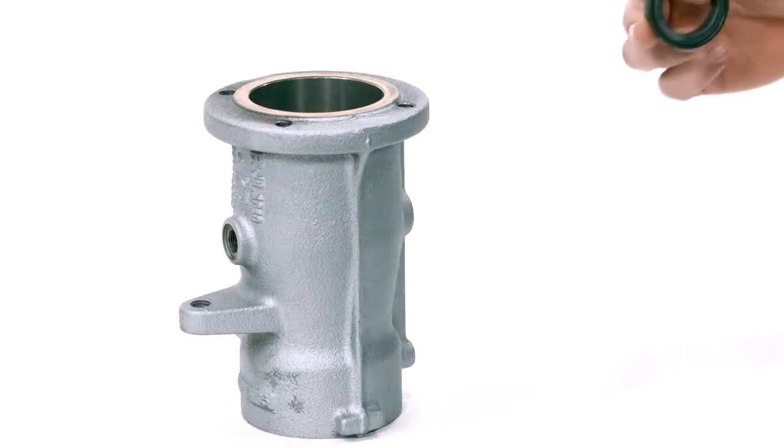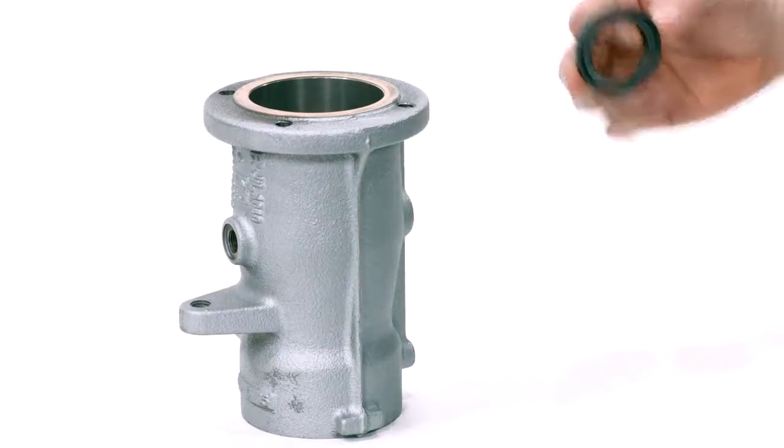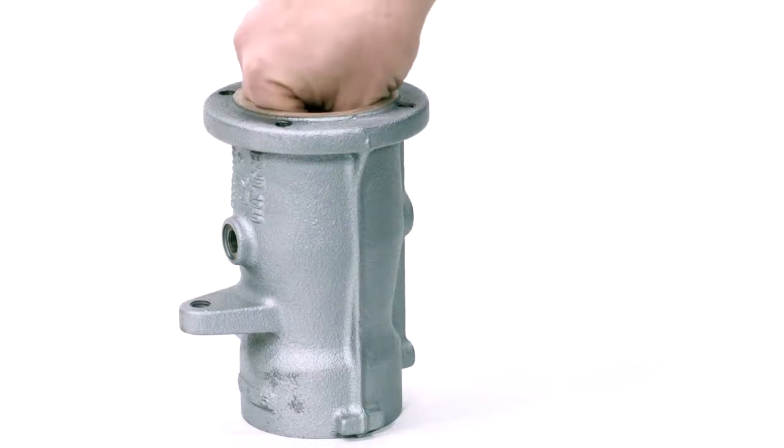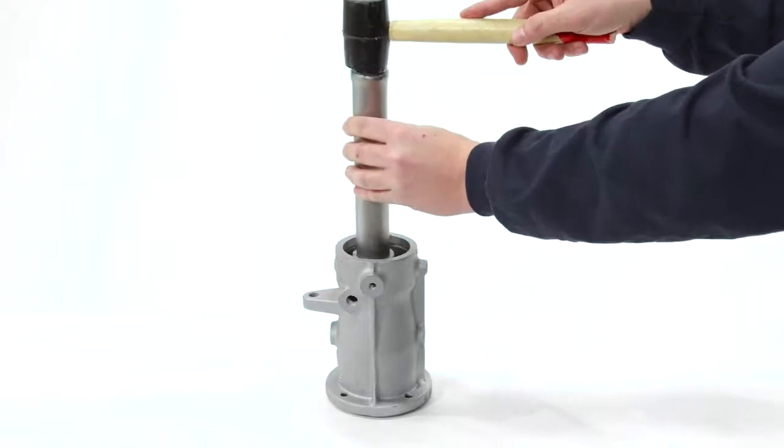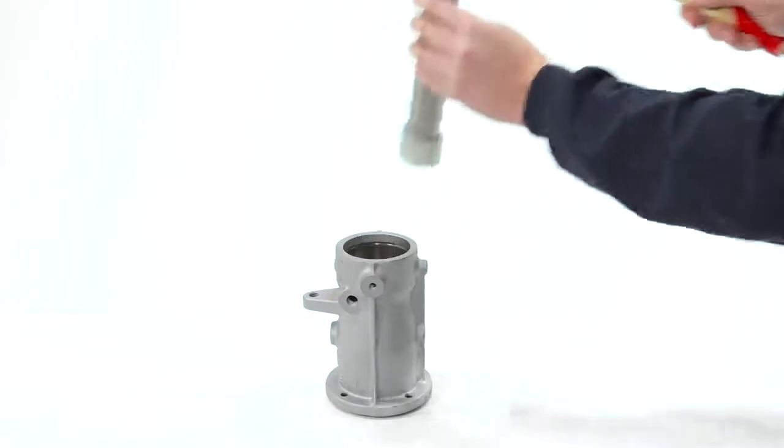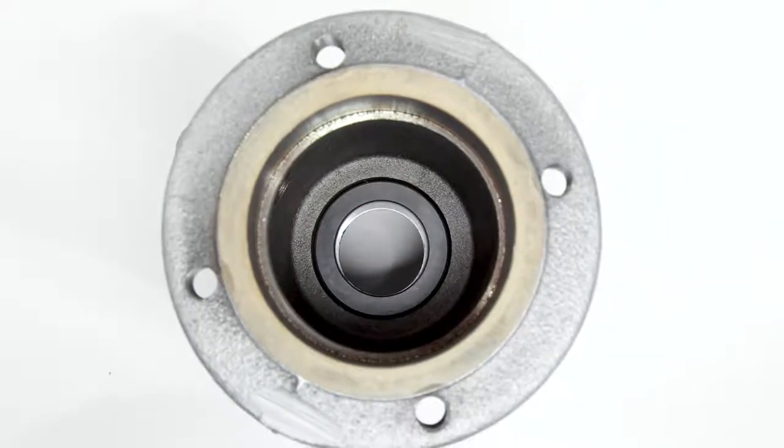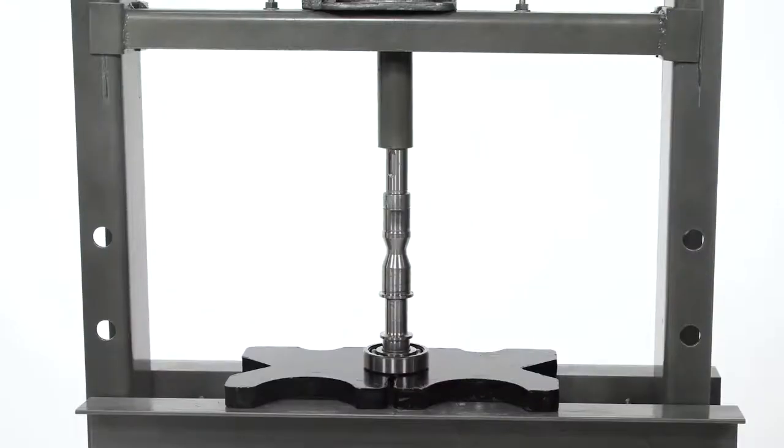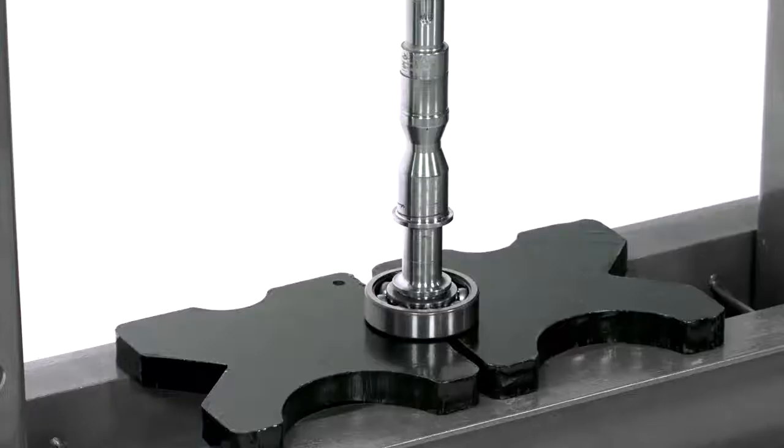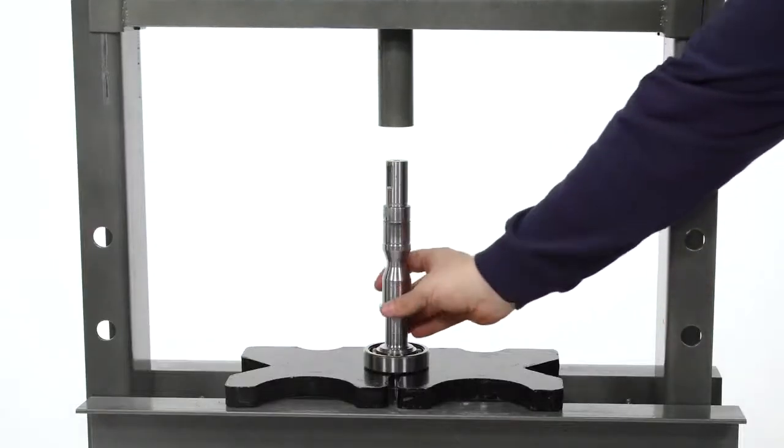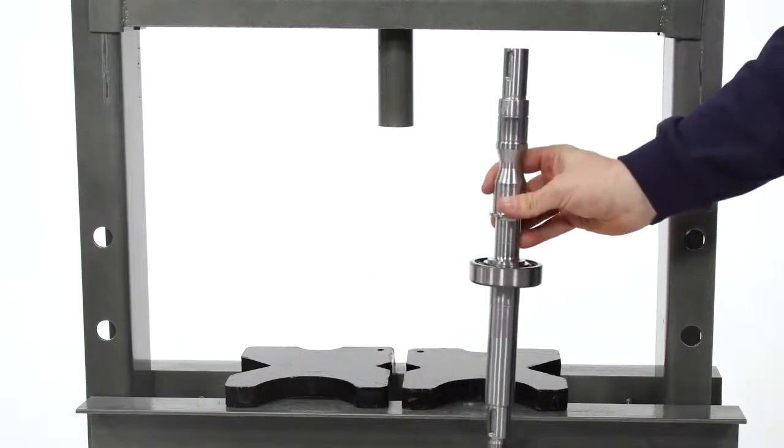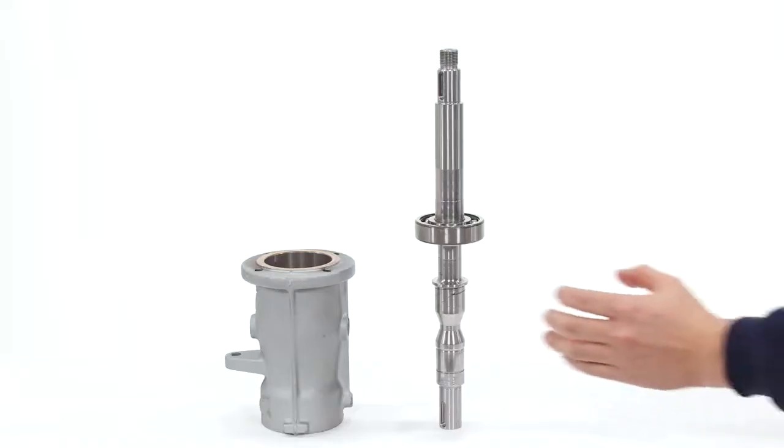Lubricate and install the stationary face of the mechanical seal and o-ring. Press the bearing onto the pump shaft on the impeller side. Install the bearing snap ring.